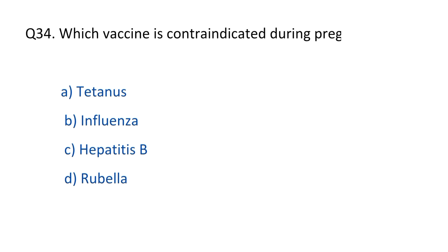Question No. 34. Which vaccine is contraindicated during pregnancy? The right option is D, Rubella.